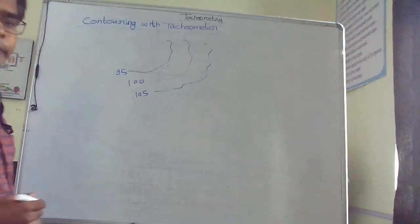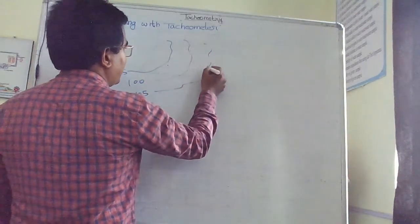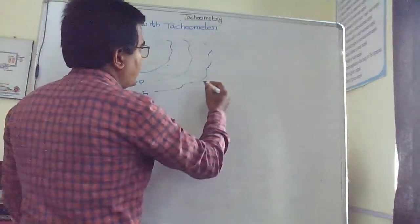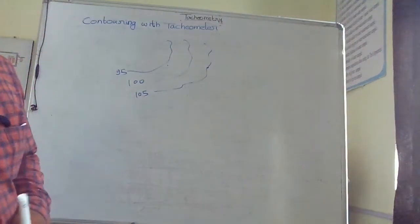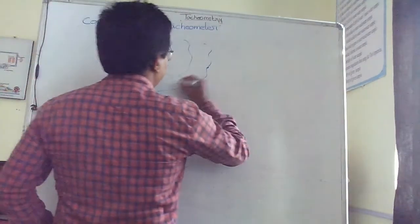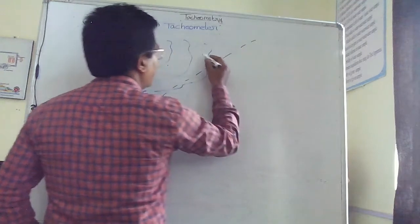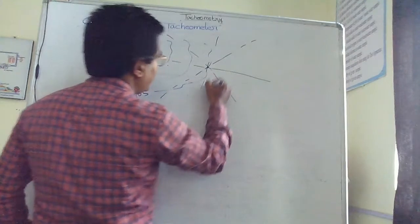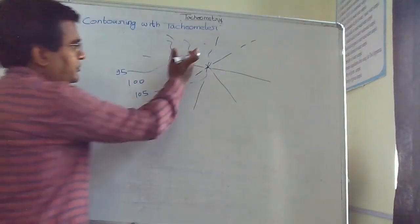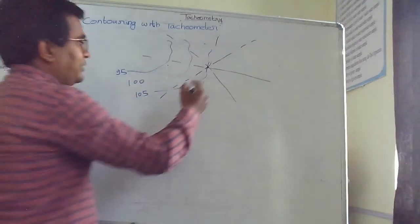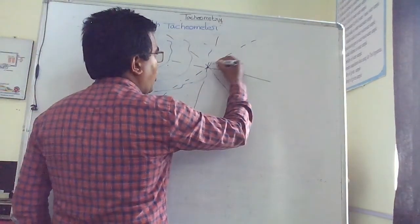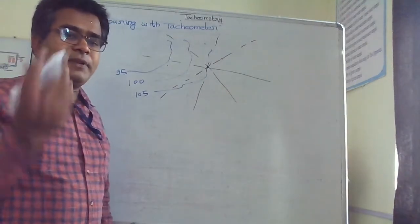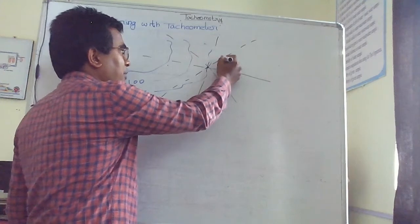What we do is set the tachometer at some point at a higher level, and then with specific angles - say we consider some lines with an angle of 30 degrees or 50 degrees - we move with some angle. On that line, we select some points. Suppose I have kept the staff at this point.